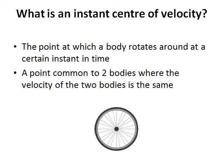What is an instant center of velocity? The instant center of velocity can be thought of in two different ways. It can be defined as the point at which a body rotates around at a certain instant in time. It can also be a point common to two bodies where the velocity of the two bodies is the same.